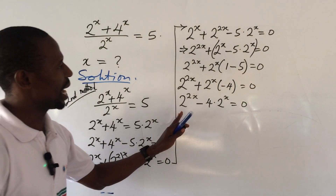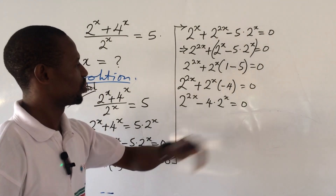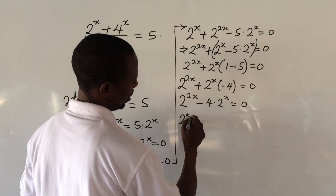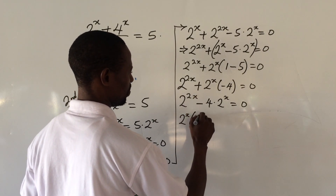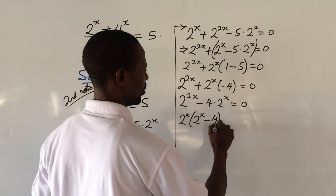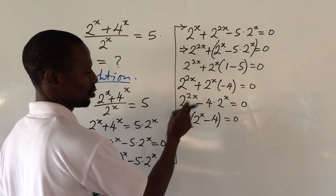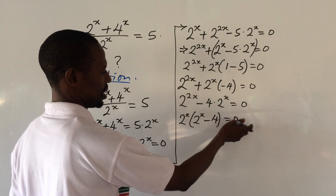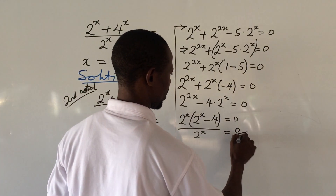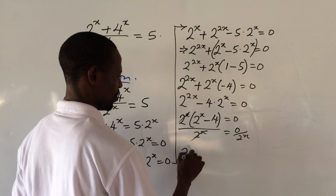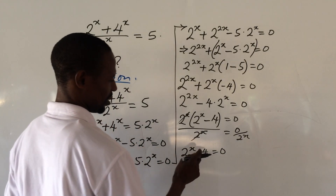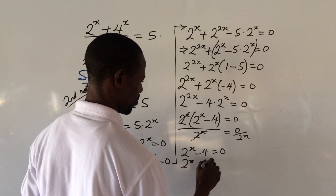We factor out 2^x again. Dividing through by 2^x, the 2^x term on the left goes to zero, leaving us with 2^x − 4 = 0. Collecting terms, we get 2^x = 4.